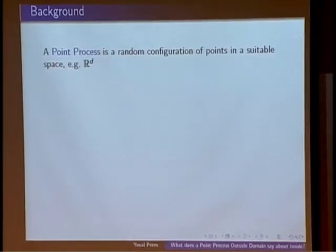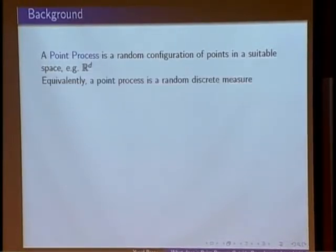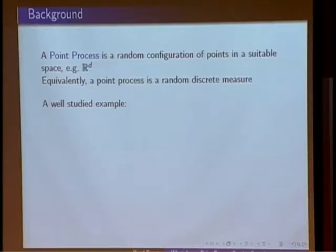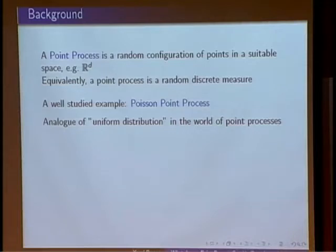We're going to take a general perspective of point processes and then specialize to the Gaussian zeros of interest. We're going to look at simple point processes — random collections of points in Euclidean space, hyperbolic space, or on the sphere. We'll be interested in processes that have the natural invariance under the isometries of the space in question.